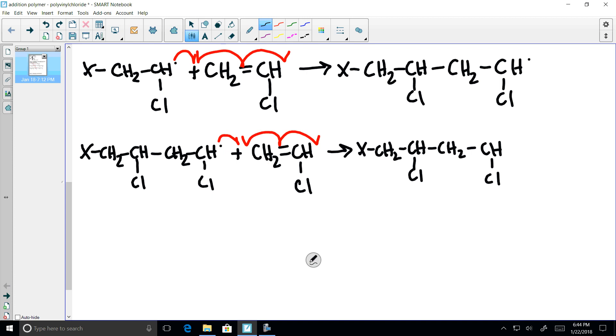And the third monomer is joined. The two electrons make a bond. CH2. Double bond becomes a single. CHCl.